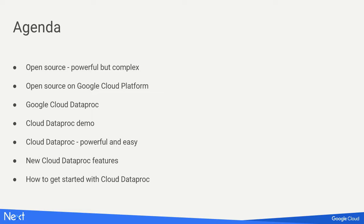We're going to talk about a few things today. First, we're going to talk about the tools themselves — they're great, they bring a lot of benefits, but they also bring a lot of complexities and headaches. We're going to talk about how we want to solve that using hardware and software innovations that are part of Google Cloud Platform. I'm going to do a live demo and create a pretty big Spark and Hadoop cluster. And then I want to share some really new, exciting things that we just launched in preparation for Google Next.